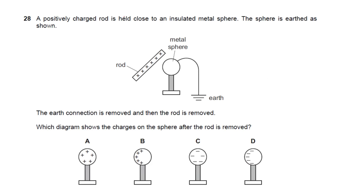Question 28: a positively charged rod is held near an insulated metal sphere, which is earthed. Electrons from the earth neutralize the positive charges induced on the far side. The earth connection is removed first, then the rod is removed. The remaining negative charges redistribute uniformly over the sphere. Answer: C.